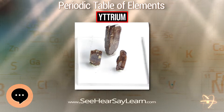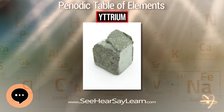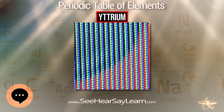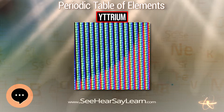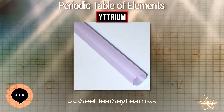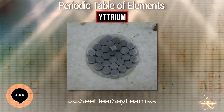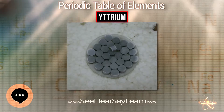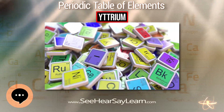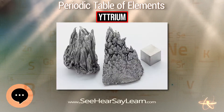Yttrium is a soft, silver metallic, lustrous, and highly crystalline transition metal in Group 3. As expected by periodic trends, it is less electronegative than its predecessor in the group, scandium, and less electronegative than the next member of period 5, zirconium. Additionally, it is more electronegative than its successor in its group, lanthanum, being closer in electronegativity to the later lanthanides due to the lanthanide contraction. Yttrium is the first d-block element in the fifth period.